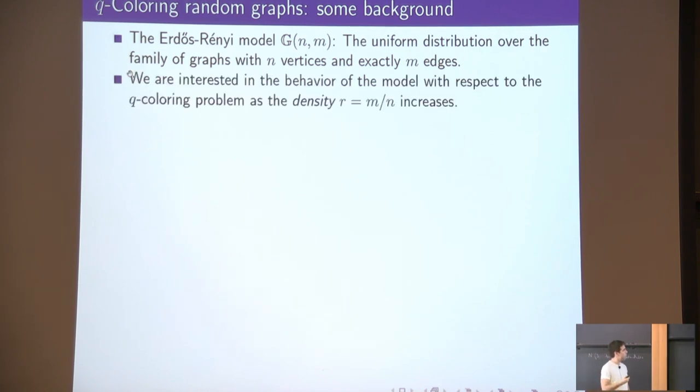What we care about here is how the q-coloring problem behaves as the density, which is the ratio between the number of constraints to the number of variables, increases. Naturally, when the density is very low, we expect the problem to be easy because we have few constraints. And as the density increases, we expect it to be hard. And indeed, this is a very natural and well-studied model.